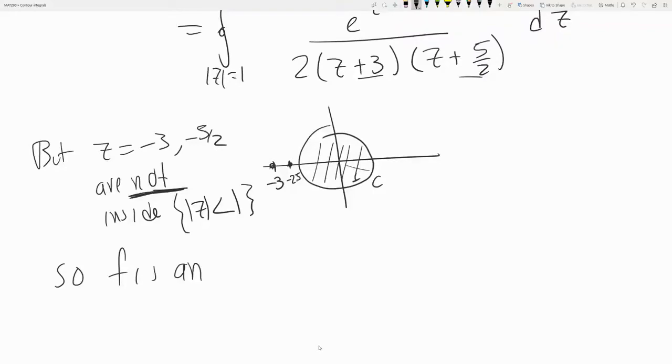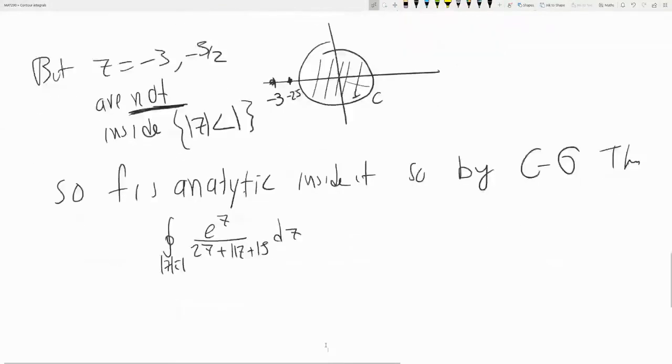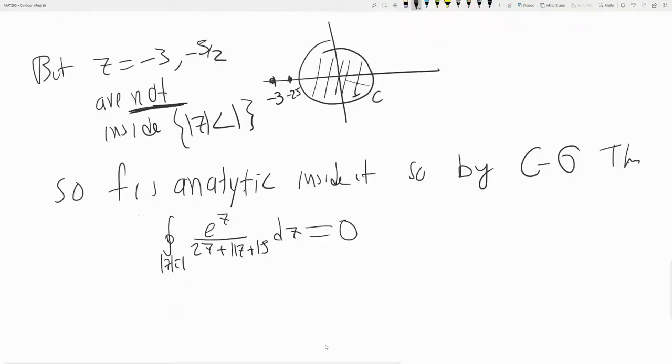So F is analytic, and so it's analytic inside. So by Cauchy-Goursat, we get zero.